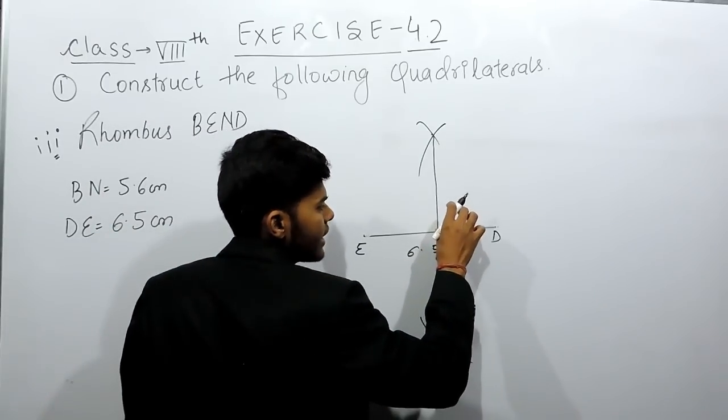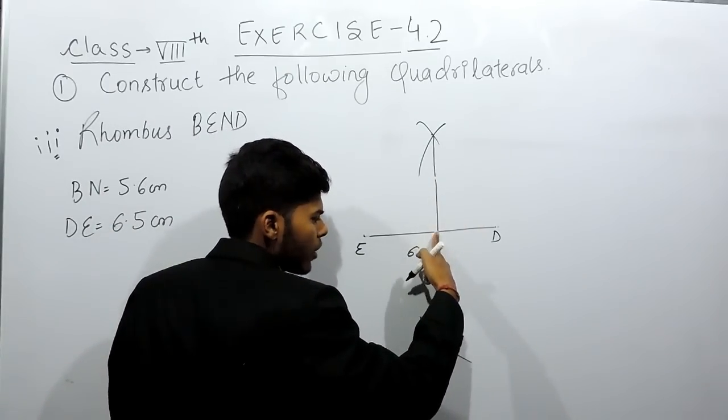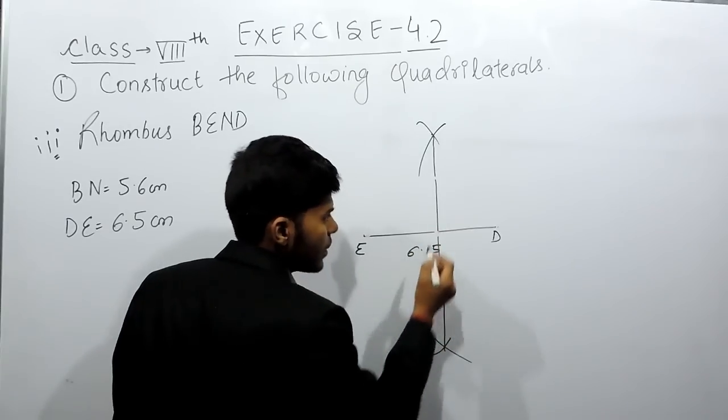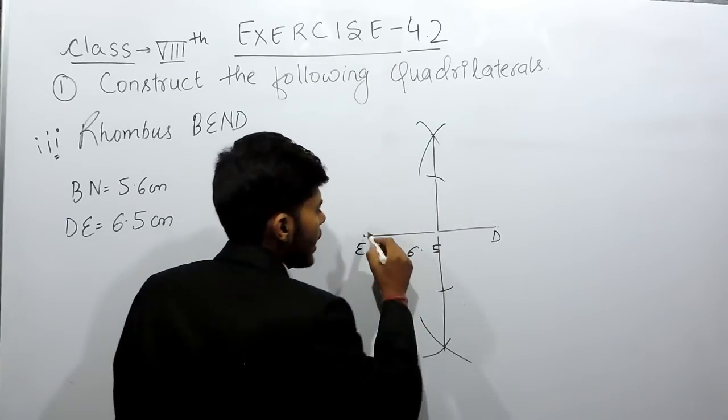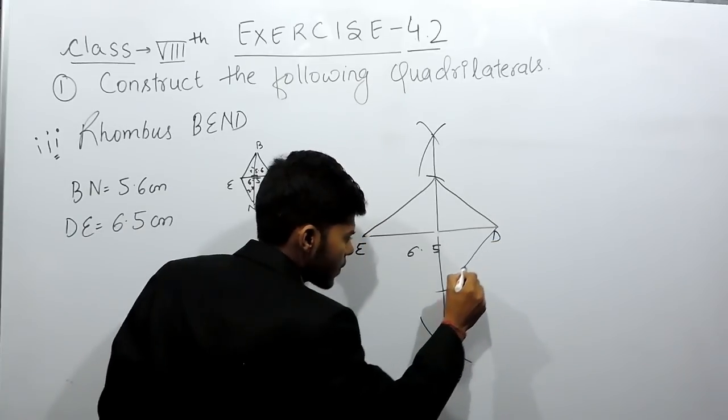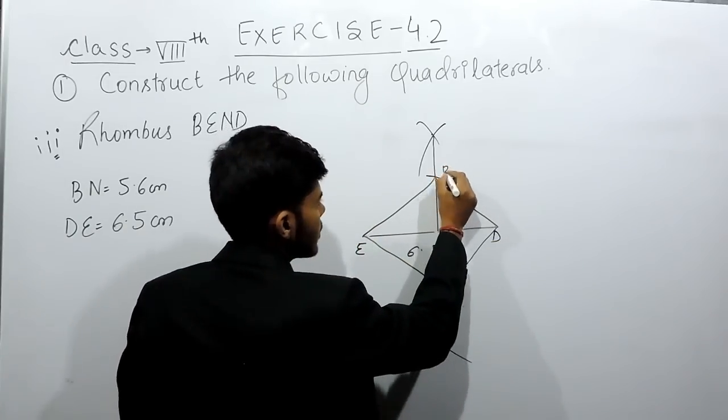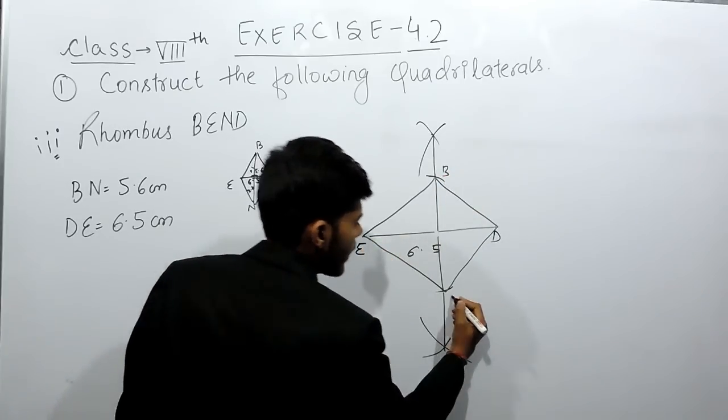Now, cut an arc of 2.8 cm from this point and similarly, an arc of 2.8 cm from this point. So it will be like this and this. Now join them. It will be B, E, N, D.